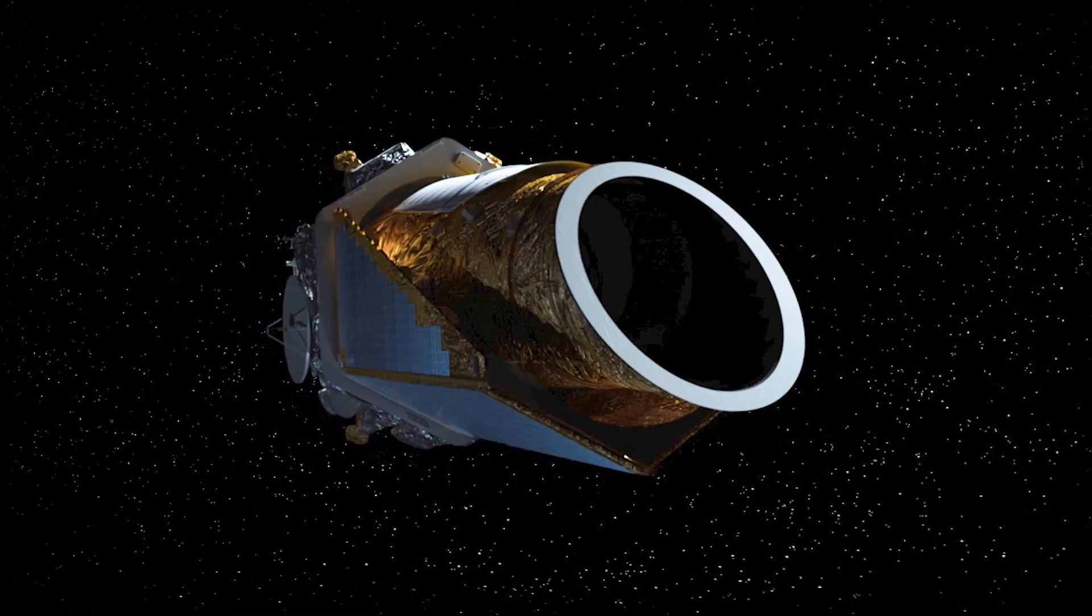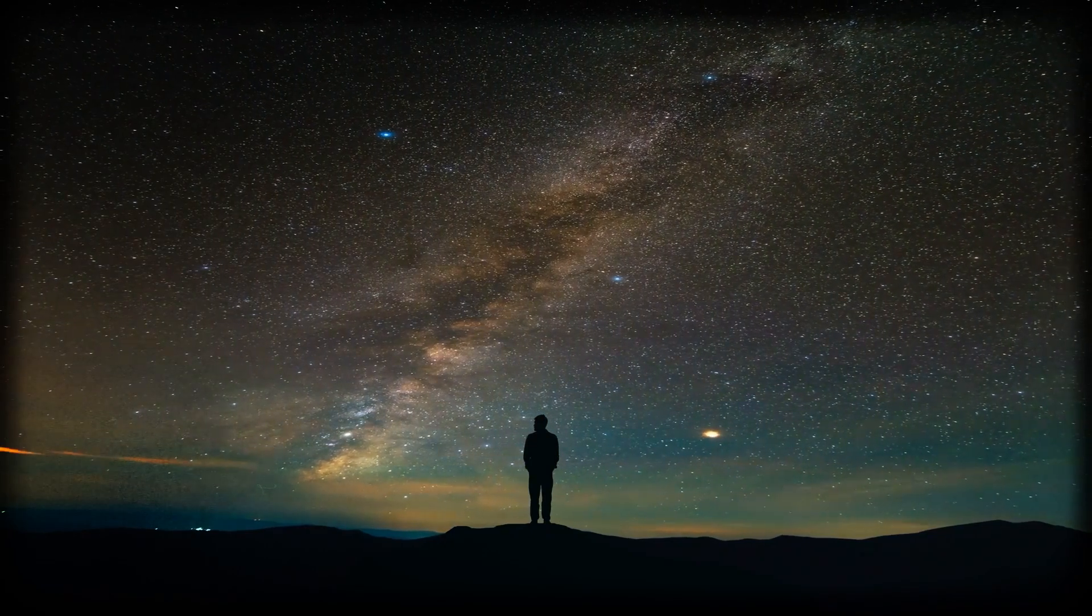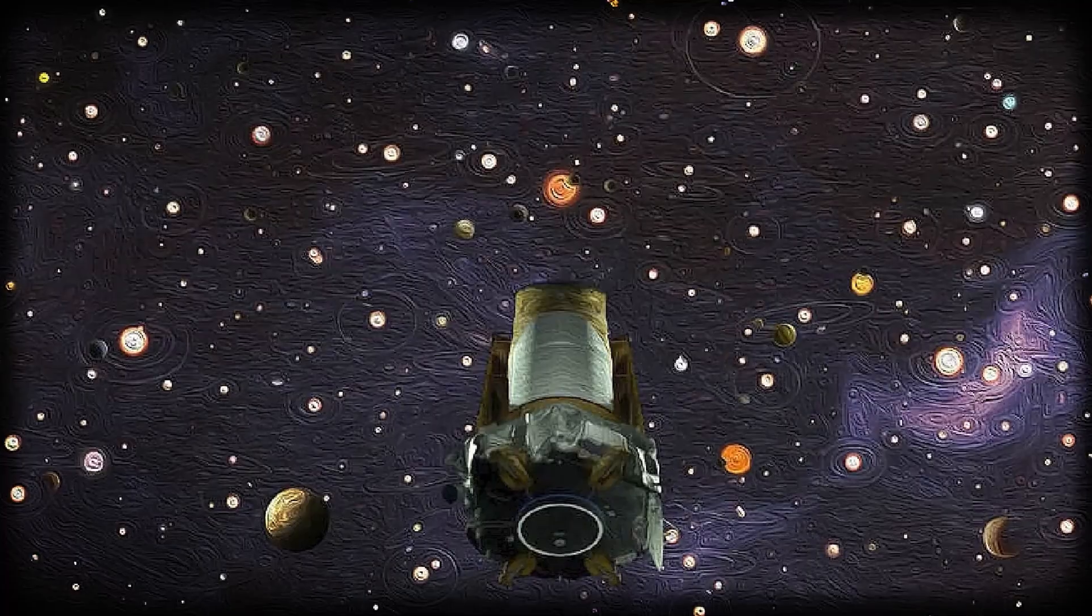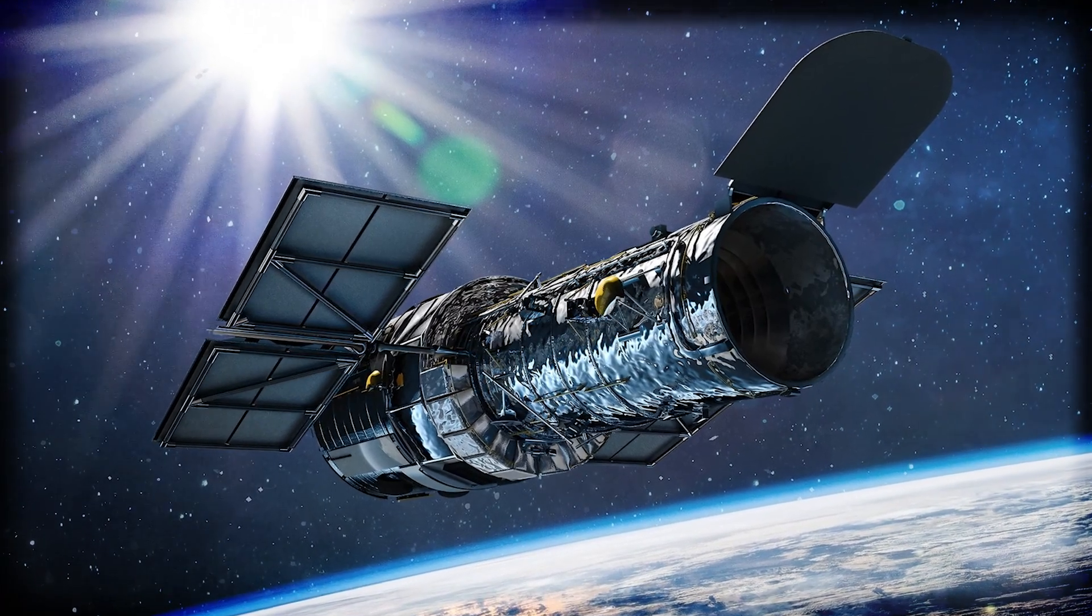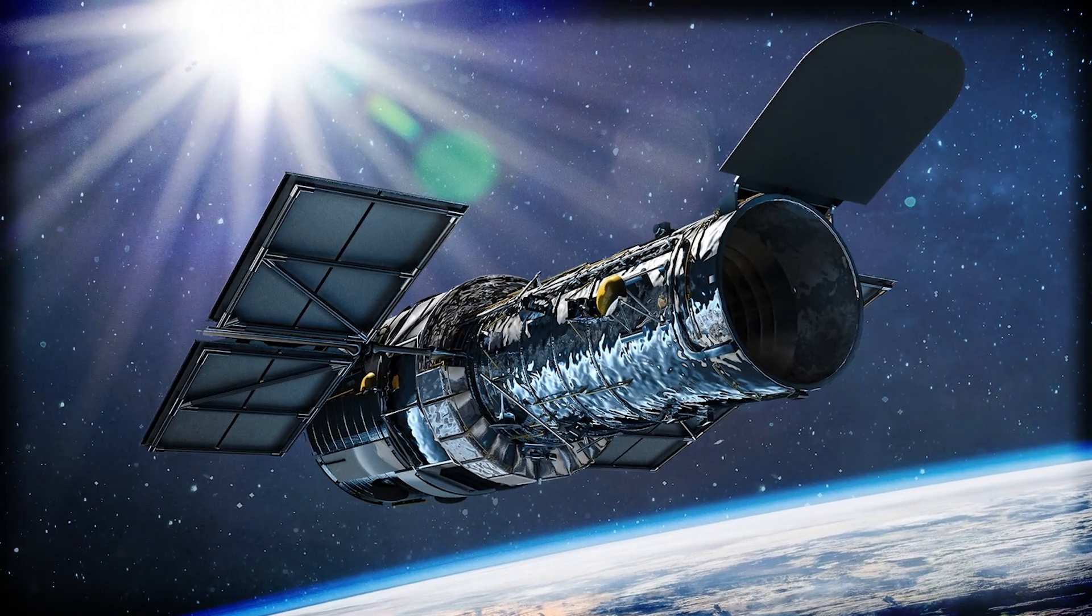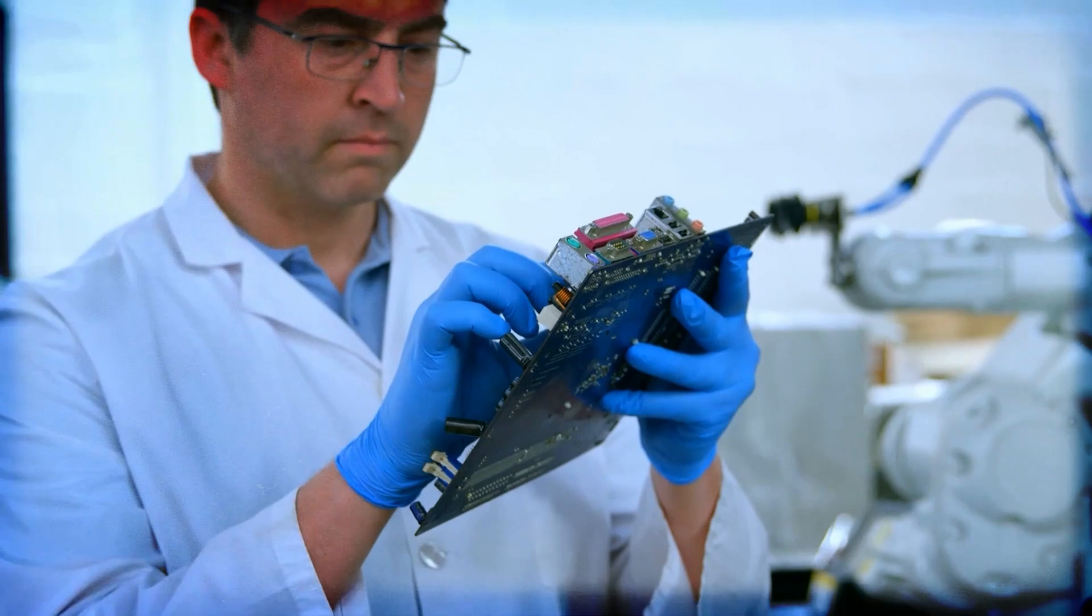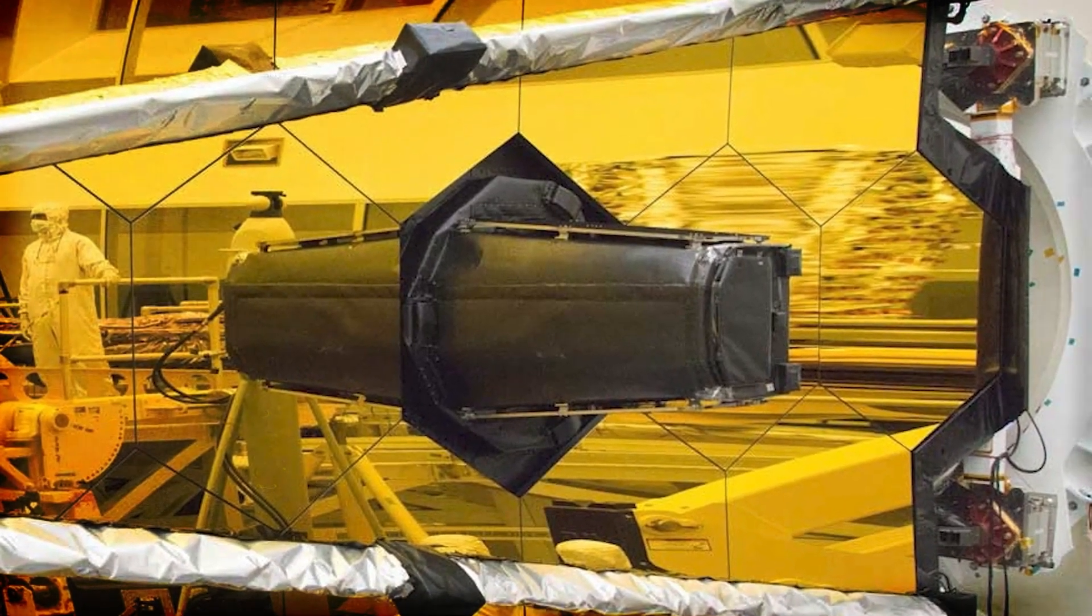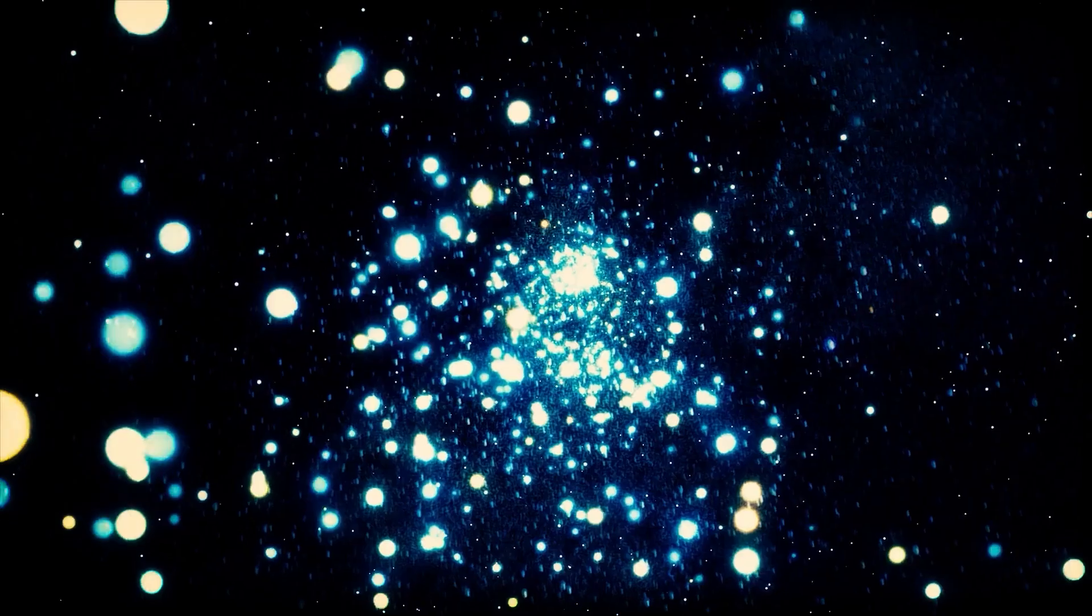That spacecraft was called Kepler, and what it found changed our understanding of the universe forever. Kepler wasn't built to roam or wander the skies. Instead, it was designed to fix its gaze on one specific stretch of space and scan non-stop for years. It was part of NASA's discovery program and it came equipped with some serious hardware, including the largest mirror ever sent into space at the time and a massive 96-megapixel camera to capture the faintest flickers of distant stars.